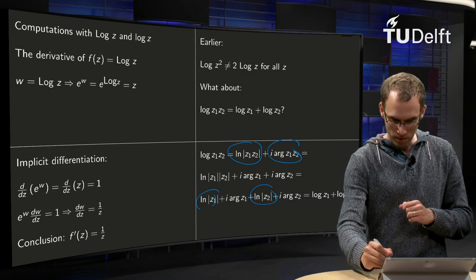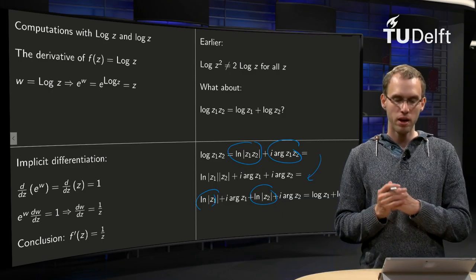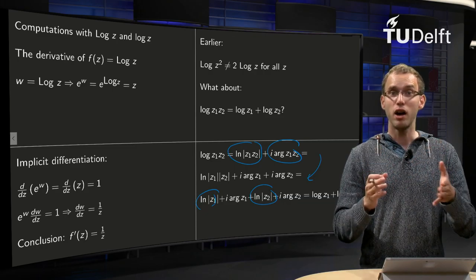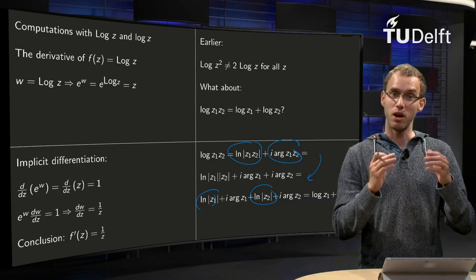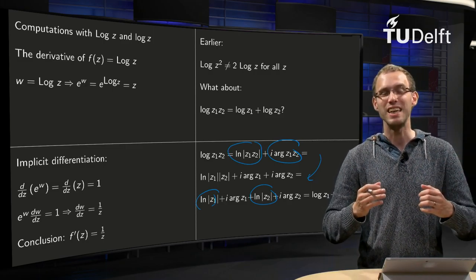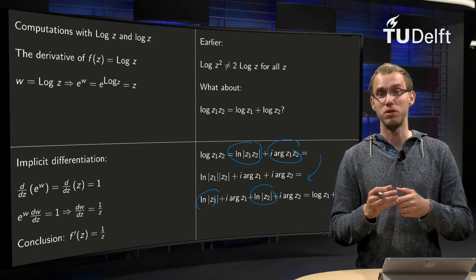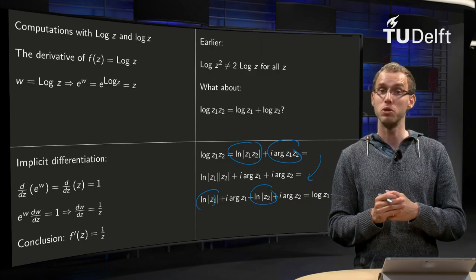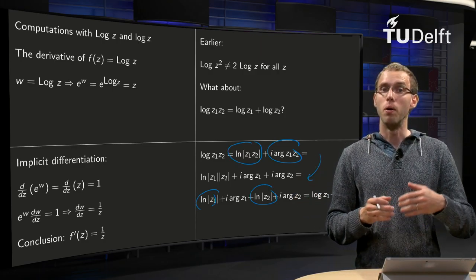The hard part is in the step over here. Can we say that the argument of z1 times z2 equals the argument of z1 plus the argument of z2? Or how should you read it? Because the small argument of z1 is multivalued, the small argument of z2 is also multivalued.